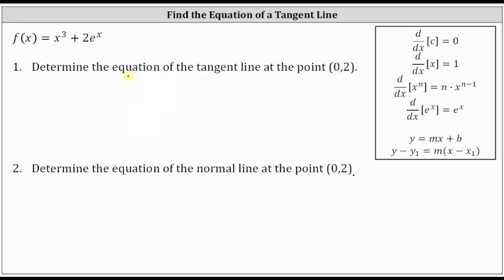In order to find the equation of the tangent line, we need to find the slope of the tangent line by first determining the derivative function. f prime of x is equal to the derivative of x cubed plus the derivative of two e to the x. The derivative of x cubed is three x squared, and the derivative of two e to the x is just two e to the x.